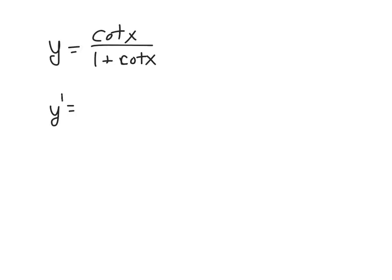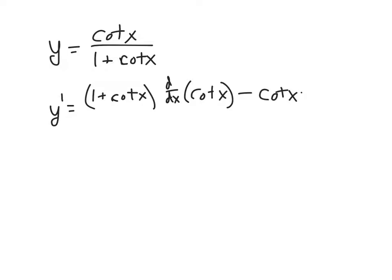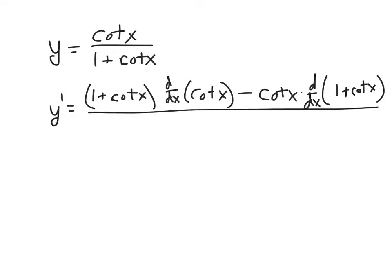The derivative is denominator times derivative of the numerator. I'm going to write it as: 1 plus cotangent X — and before I take the derivative, I just like to note that I'm taking the derivative of cotangent X — then minus the numerator, which is cotangent X, times the derivative of the denominator, which is 1 plus cotangent X, all over the denominator squared, which is (1 plus cotangent X) quantity squared.